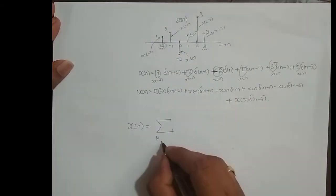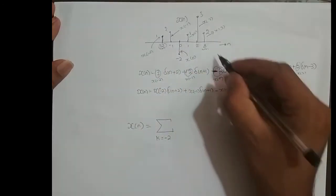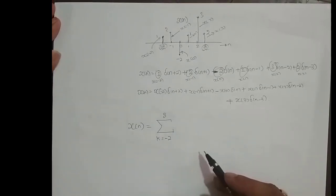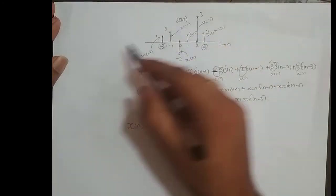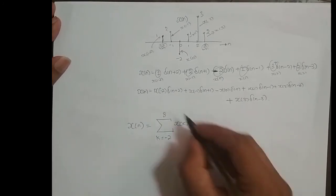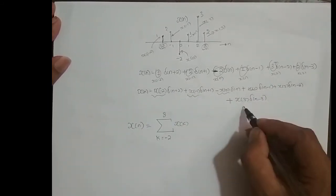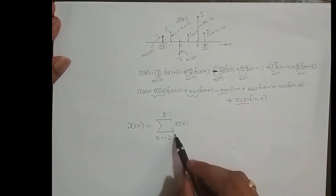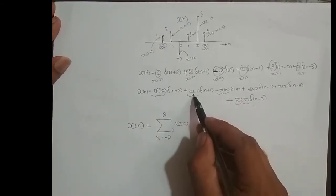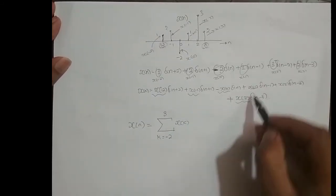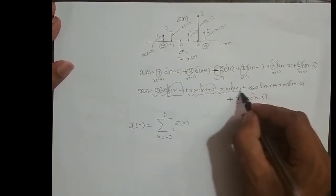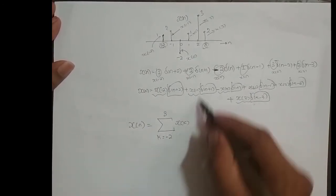I can write it as X of n equals summation over k, where k varies from minus 2 to 3 — since the signal starts at minus 2 and ends at 3. Depending on the range of the signal, you set the summation limits. If X of n varies from minus infinity to infinity, then k varies from minus infinity to infinity. I can write the summation using X of k to address these sample values.